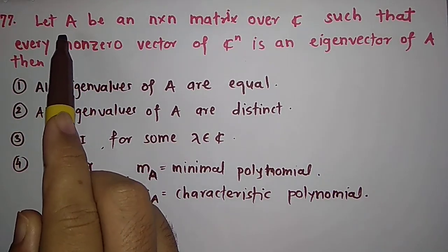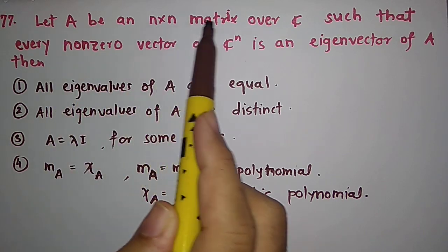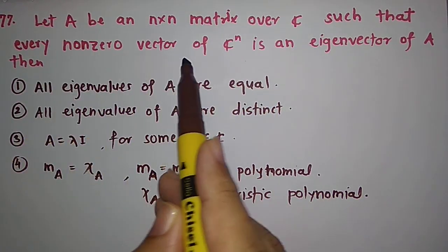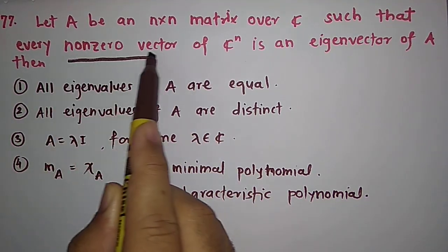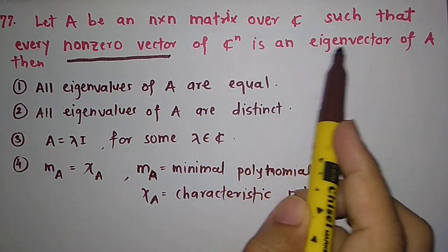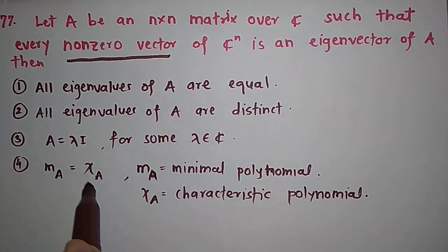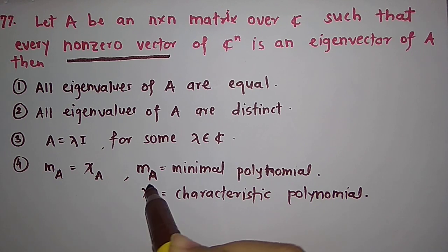So let us see what is the problem. The problem is we have given an n by n matrix A over C such that every non-zero vector of C^n is an eigenvector of A. Then we need to find out what are the options that are correct.